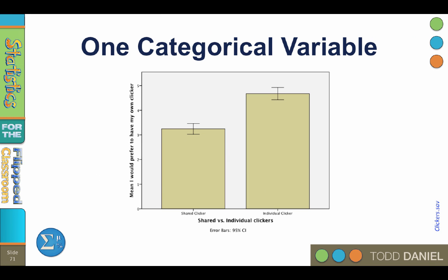Let's look at the resulting bar chart. We see that preference for an individual clicker was lower in the shared clicker group than it was in the individual clicker group. To interpret these findings, I want you to notice how the bottom of the taller error bar does not overlap with the top of the lower error bar.